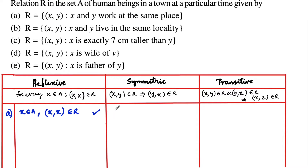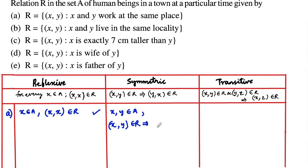Coming to the symmetric: let us consider two persons x and y belonging to A. Let (x, y) belong to r such that x is working together with y, so x and y work at the same place. This also implies that y and x are also working at the same place — both work at the same organization. So (x, y) belongs to r and also (y, x) belongs to r. So it is symmetric.